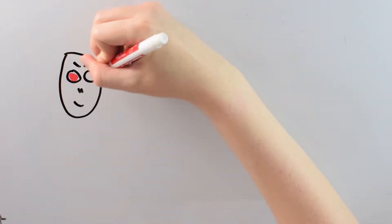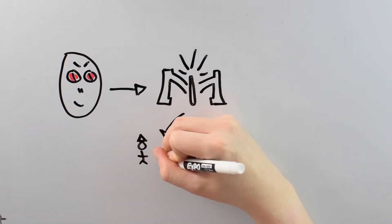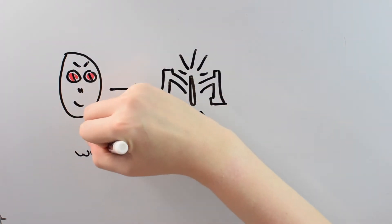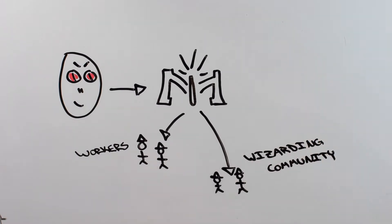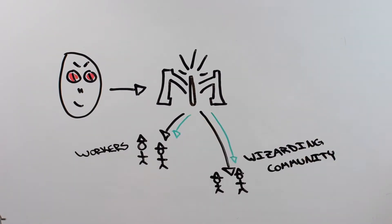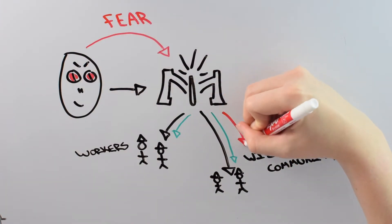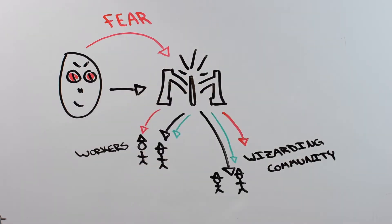HIV infection is kind of like when Voldemort took over the Ministry of Magic. The Ministry of Magic already existed. It already has its own workers, and it already has a standing in the community. The Ministry's job is usually to enforce magical law. But when Voldemort gets involved, he uses that infrastructure that's already in place to spread a message of fear.